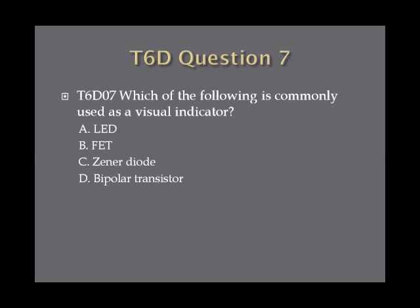Question 7. Which of the following is commonly used as a visual indicator? A. LED, B. FET, C. Zener diode, or D. Bipolar transistor?